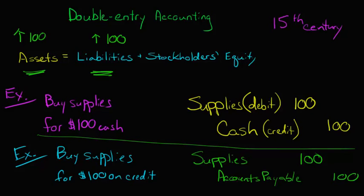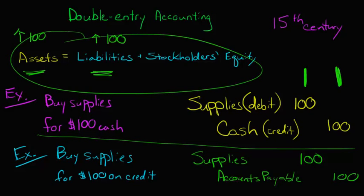Just remember: with double-entry accounting, what we're saying is that when we have any kind of transaction — any kind of economic event that needs to be recorded financially — we're not just going to make one entry and say we've got some supplies now. There's going to be a corresponding entry or entries that makes it so that the left side, the debits, equals the credits and that this equation always balances. That's double-entry accounting.